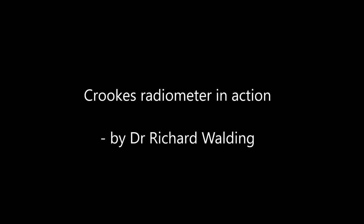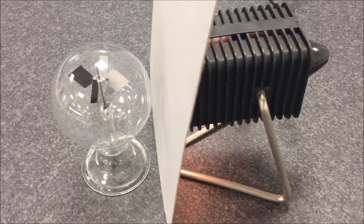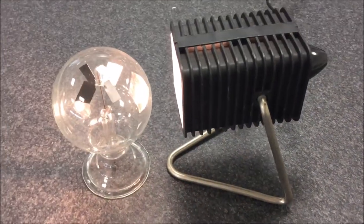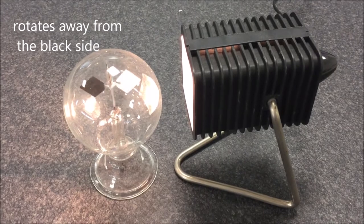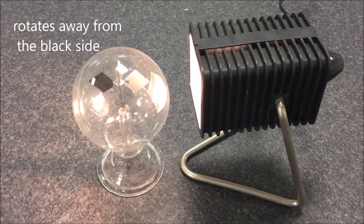The Crookes Radiometer consists of a glass container inside which are four little paddles, one side coated black, one side coated white, and most of the air has been removed.